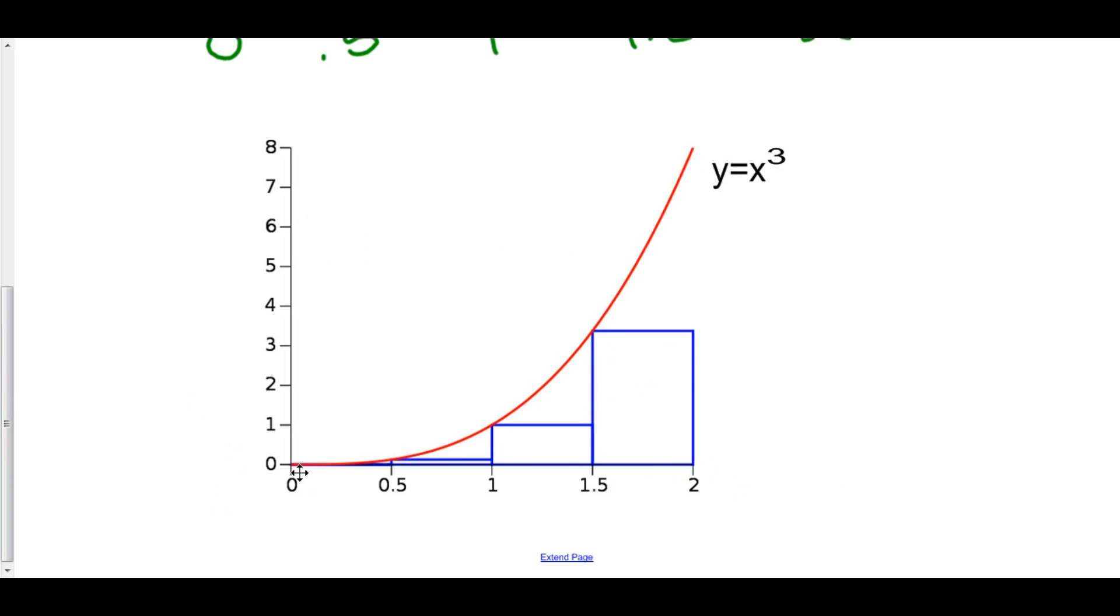Our first rectangle starts off at 0, 0 because f of 0 is 0, 0 cubed is 0, and that just goes along the x-axis. Our second rectangle is from 0.5, which is exactly what we noted right here.